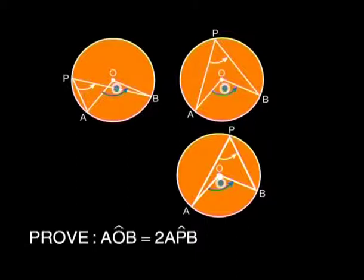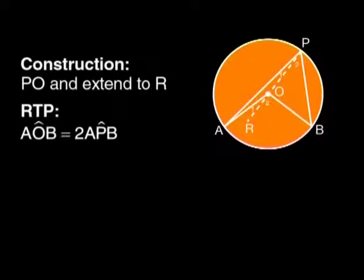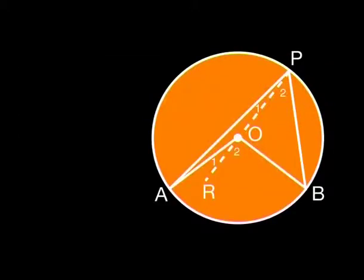What we need to prove is that angle AOB is equal to twice angle APB. I will lay out the given and required-to-prove information for this theorem. I will also give you a construction that will help towards the proof. Then you can try to work out a proof for yourself. We are given a circle with center O and with A and B on the circumference. We are also given angle AOB, OA and OB. A point P is on the circumference to create angle APB. Construct PO and extend to R. You are required to prove that angle AOB equals twice angle APB.